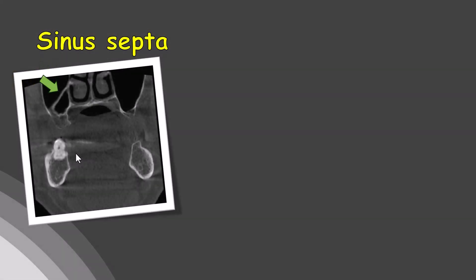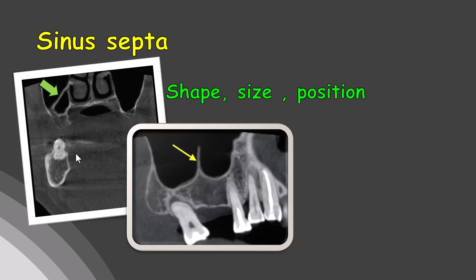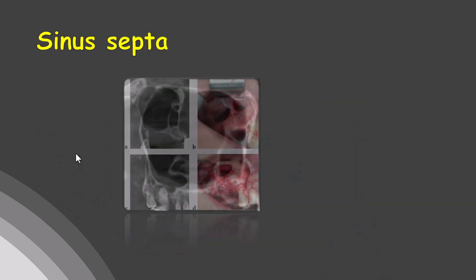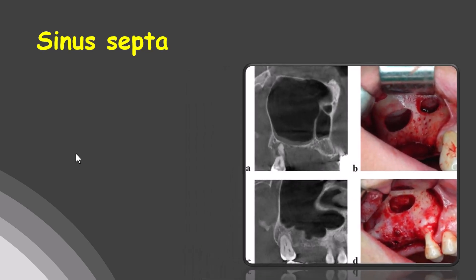The loss of the alveolar process and increased sinus pneumatization are consequences of tooth loss in the posterior maxilla. Regarding sinus septa: sinus septa vary in shape, size, position, and development, and are known to be present in the maxillary sinus floor in around 40% of the population. The absence of sinus septa is favorable, because the presence of septa increases the chance of sinus membrane perforation during the sinus lift procedure — and we don't want anything inside the sinus causing infection.